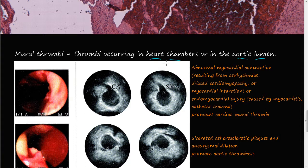What causes these mural thrombi? Abnormal myocardial contractions that usually result in arrhythmias, dilated cardiomyopathy, or myocardial infarction or heart attacks. Inside the heart, you can get mural thrombi by abnormal myocardial contraction.